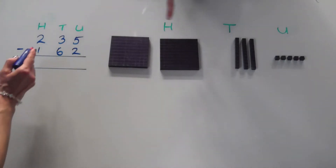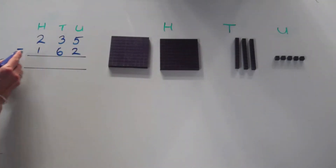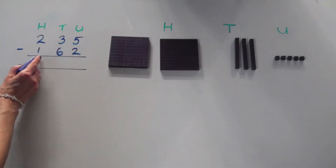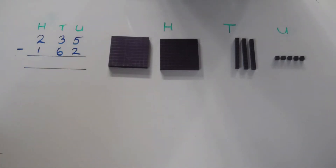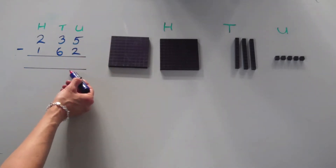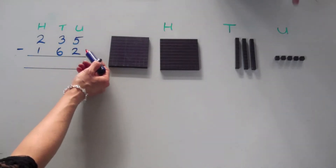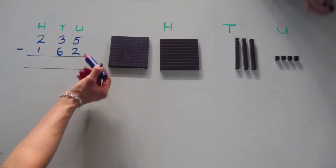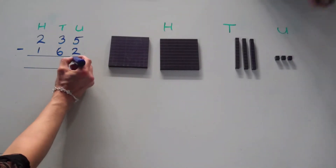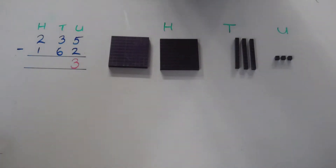One hundred and thirty-five subtract one hundred and sixty-two. As before, let's start with the units column. Five subtract two is three.